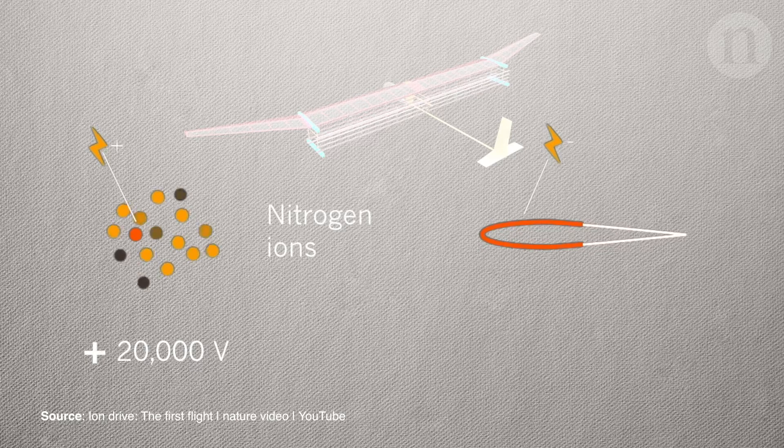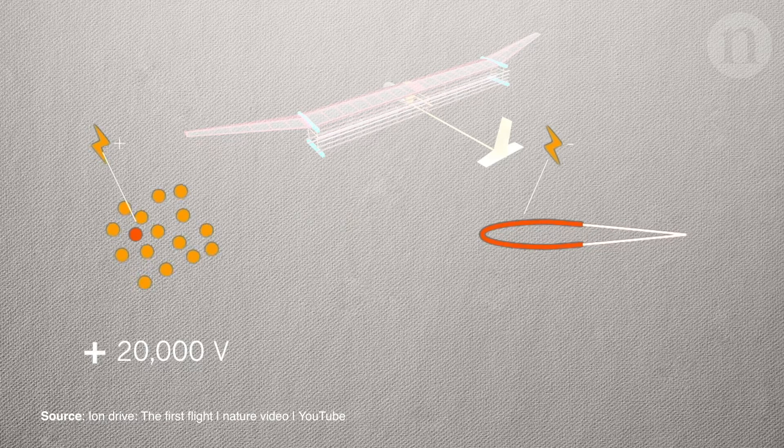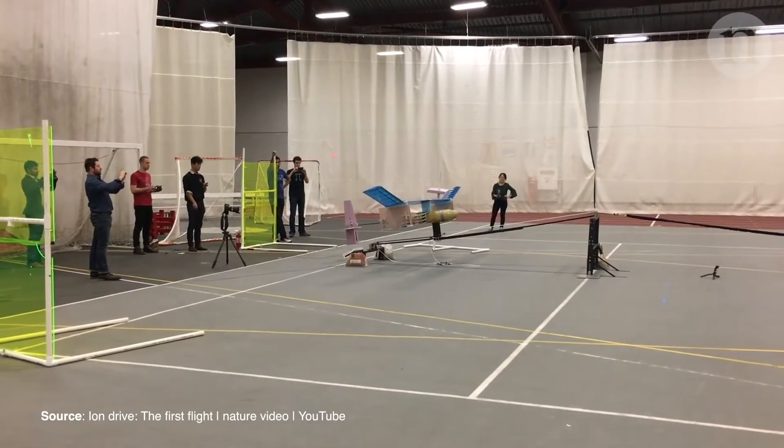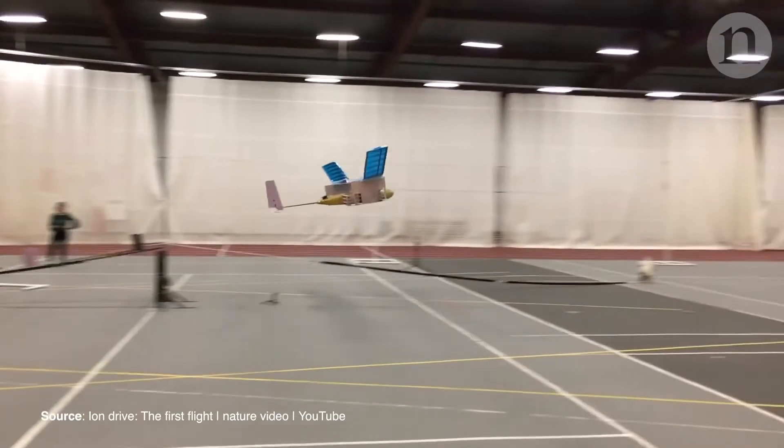The plane's fuselage holds a stack of lithium polymer batteries, which supply 40,000 volts via a lightweight power converter. The MIT team flew the plane 60 meters, which was the maximum distance of their testing area.